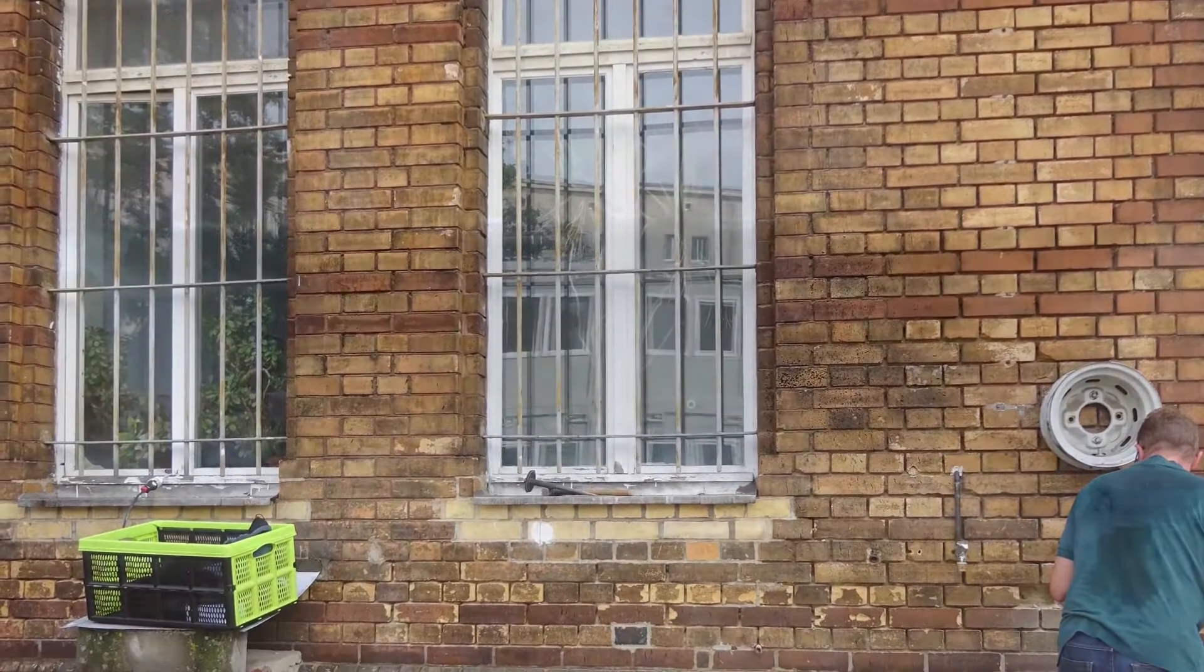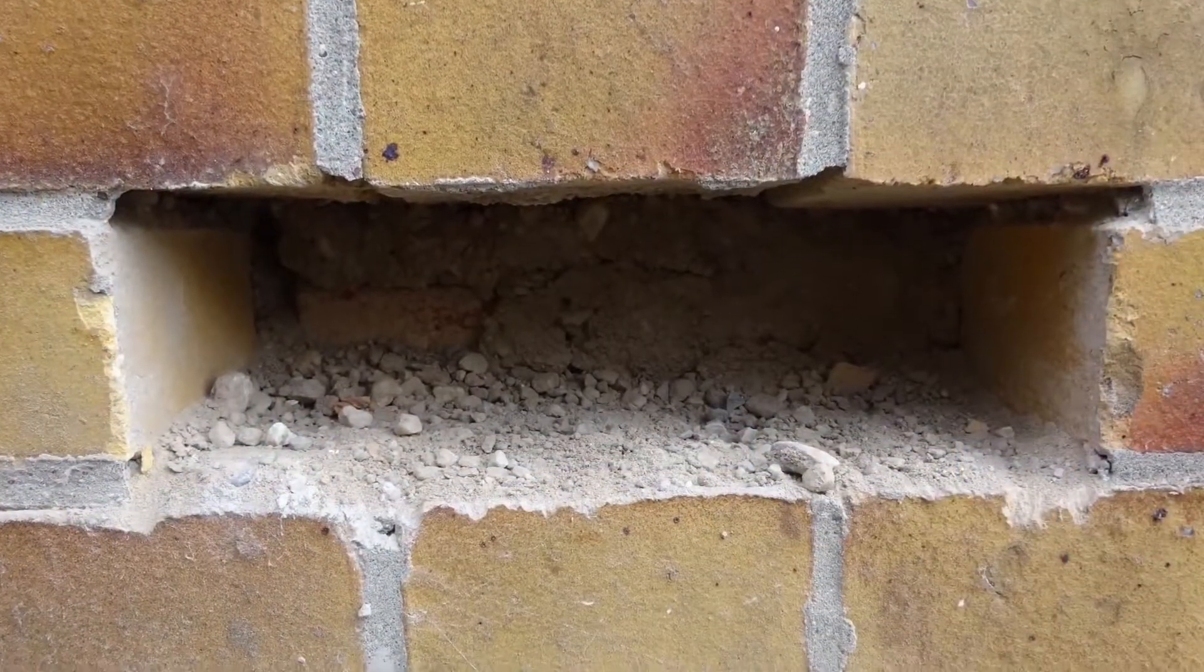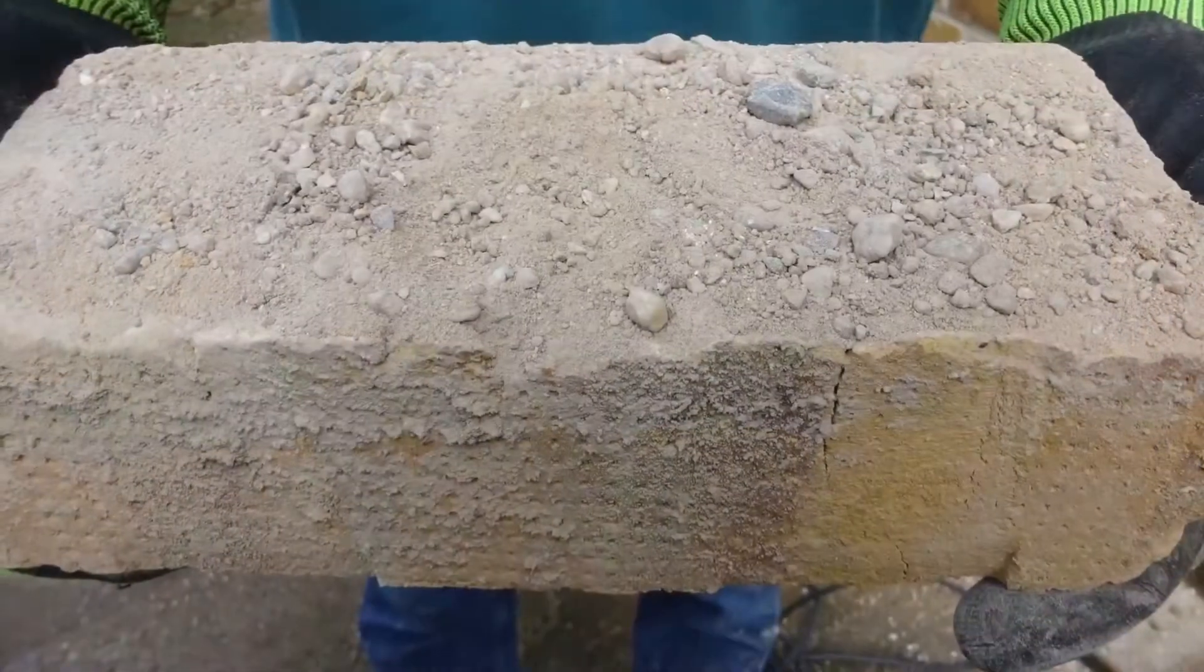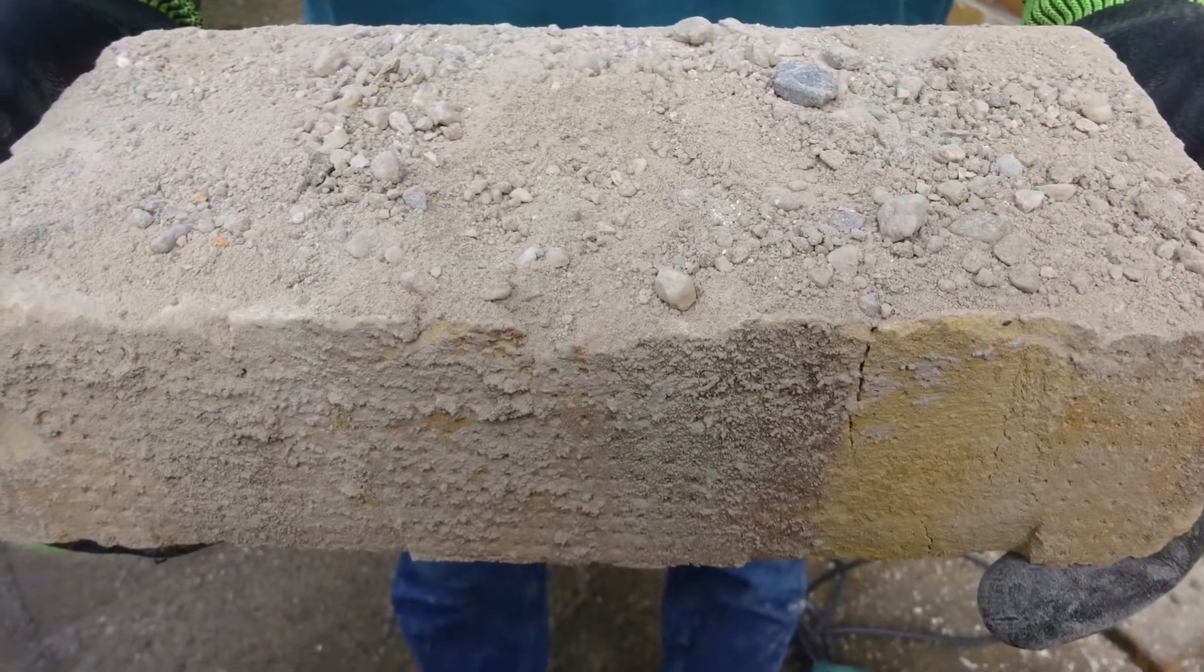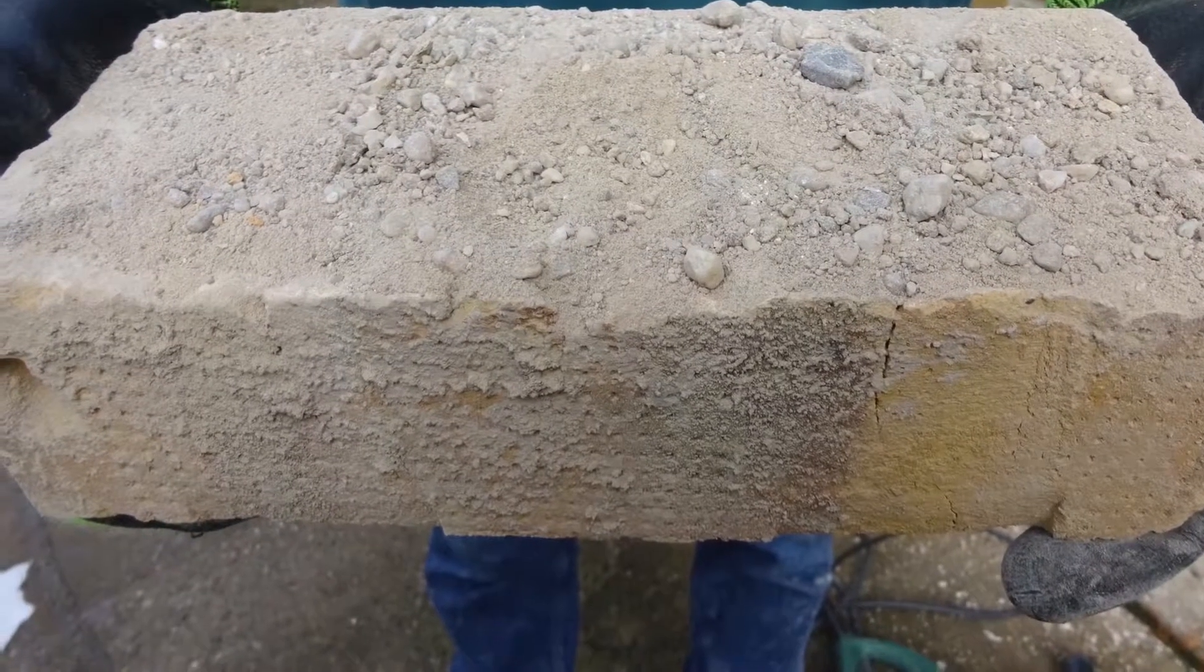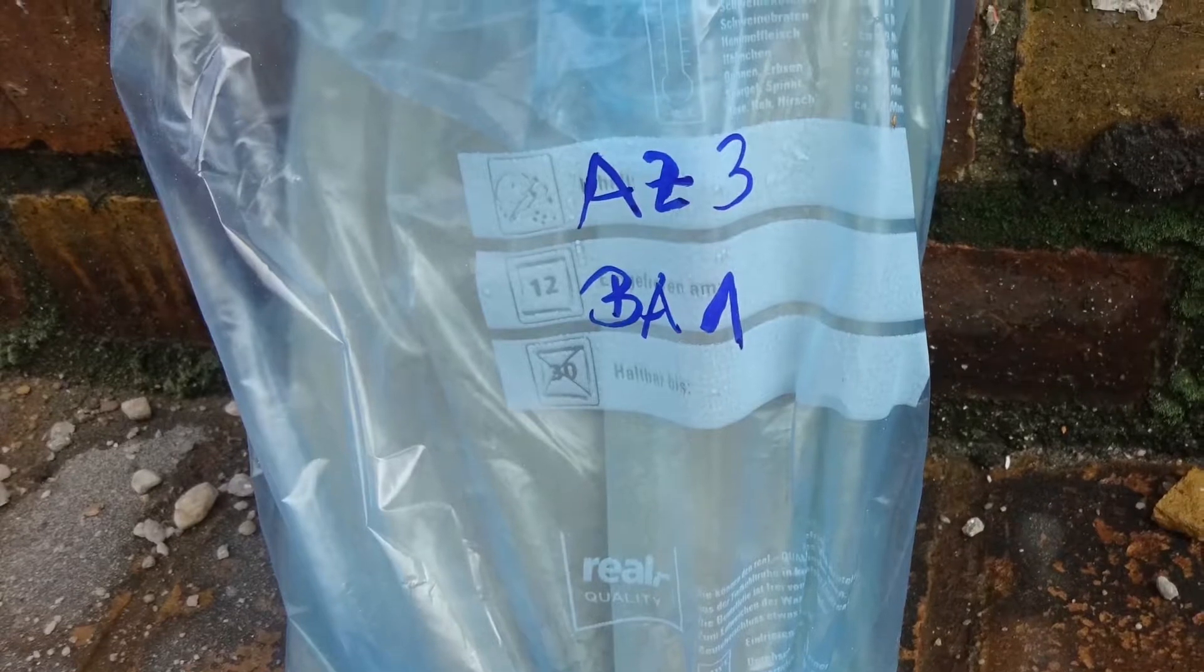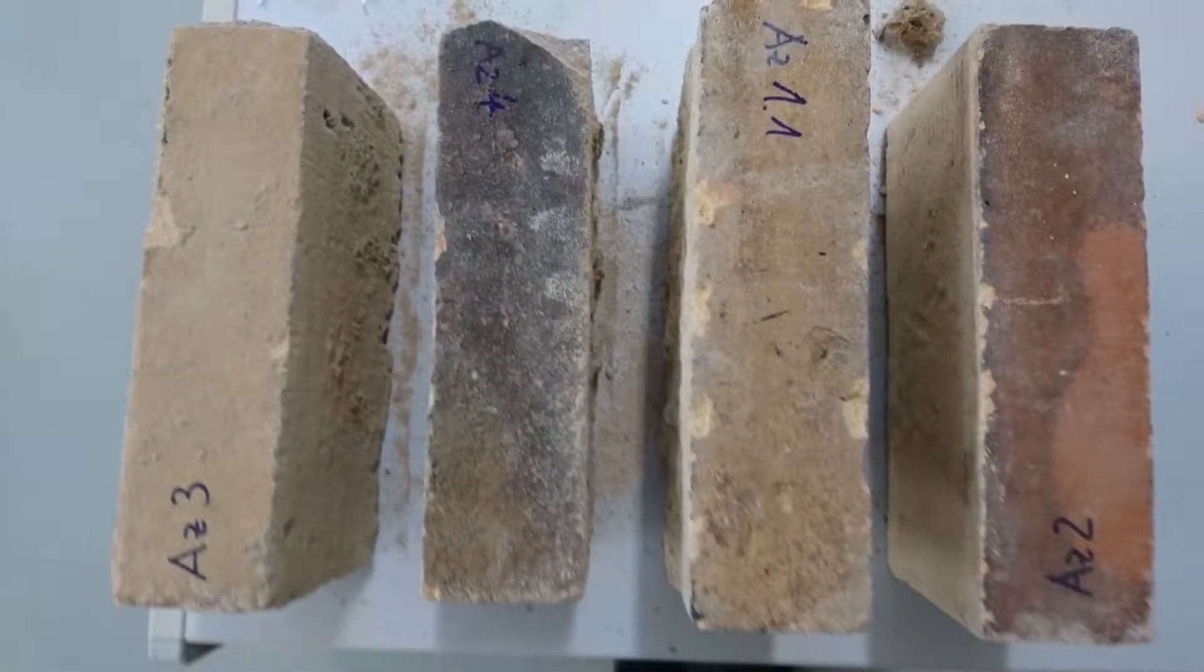In a first step, the material properties of the existing façade are measured in the lab. For this purpose, brick samples are taken at suitable areas from the façade. These are packed vapor-tight on site and provided with an identifier.